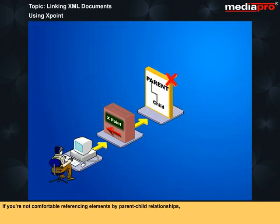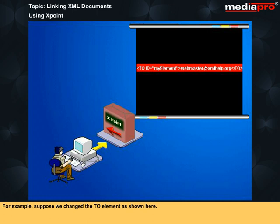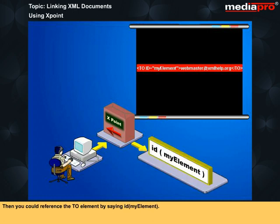If you are not comfortable referencing elements by parent-child relationships, you can give each element a unique name with the ID attribute, and then use the XPointer ID function to reference the named elements. For example, suppose we change the 'to' element as shown here. Then you could reference the 'to' element by saying ID of 'my-element'. Further, you could reference the text contained by the 'to' element using that same approach.